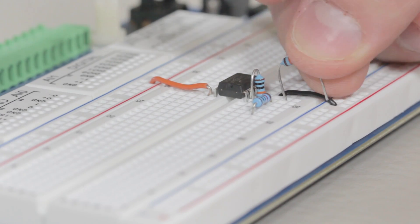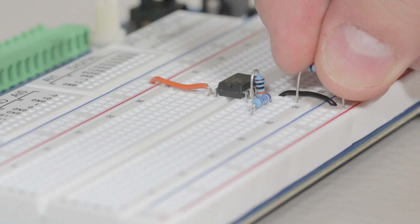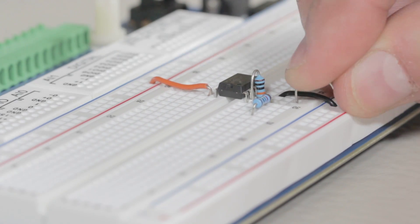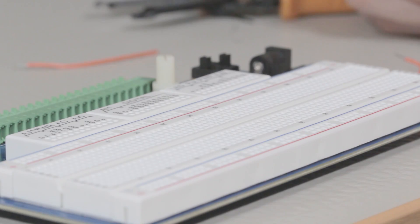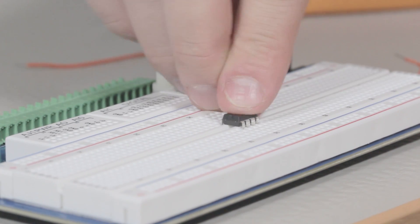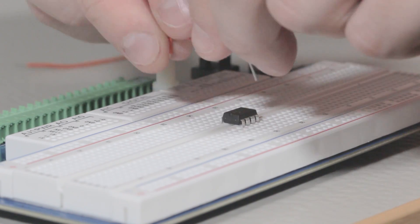When prototyping a circuit, connection between different tracks is achieved using either wire or the legs of the components themselves. The separation down the middle of the board is for placing integrated circuits.